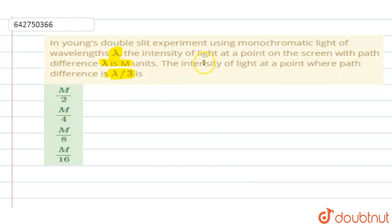So they are saying that if they are using a monochromatic light of wavelength lambda, the intensity they are obtaining with the path difference is m. The intensity when the path difference becomes lambda by 3 is what you are supposed to calculate.